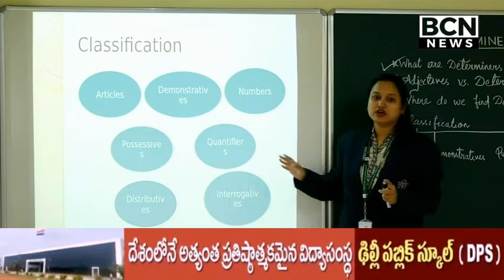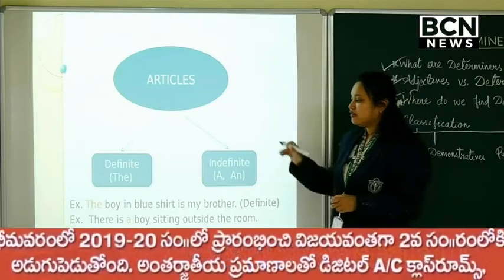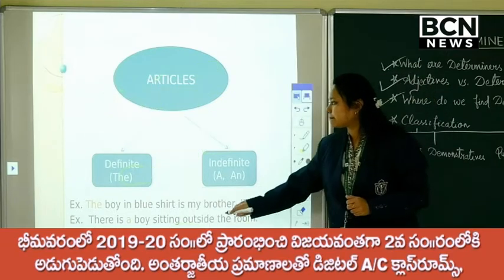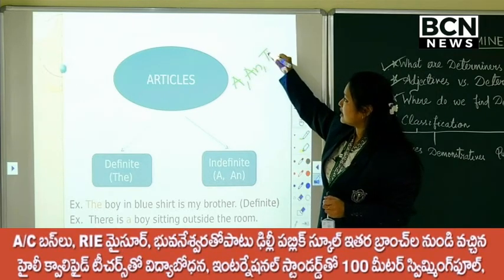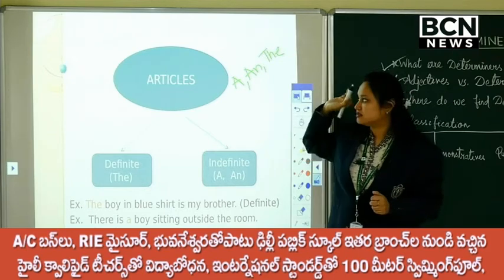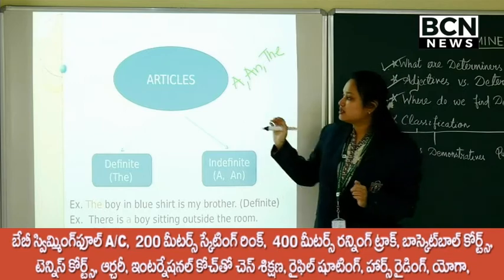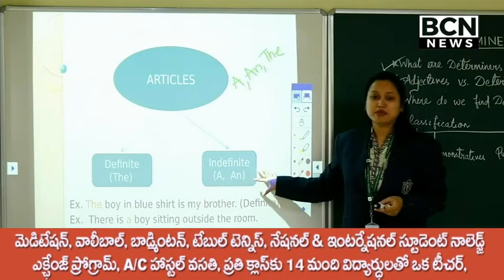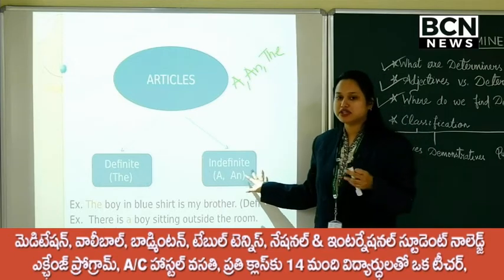When I say articles, you all know — there are only three articles in the English language: a, an, and the. We have been reading these since class 1. An orange, an apple, a boy, a girl — we know that. Articles are of two types: some are definite, and some are indefinite. Let's watch a video to understand the difference.